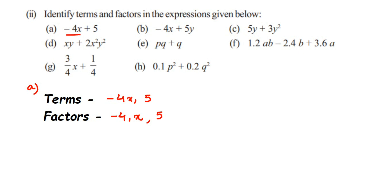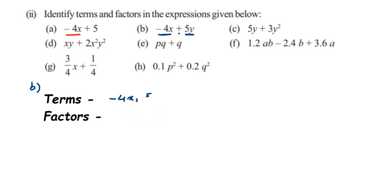The second expression is minus 4x plus 5y. It is separated by a plus sign, so the two terms are minus 4x and 5y. For the first term, the factors are minus 4 and x. For the second term, the factors are 5 and y.